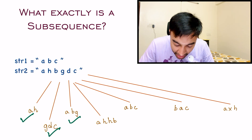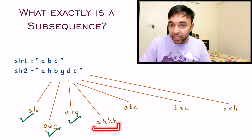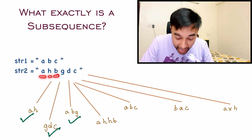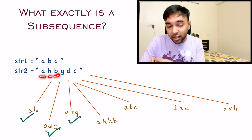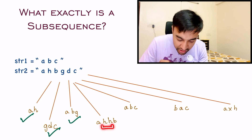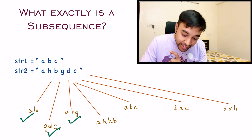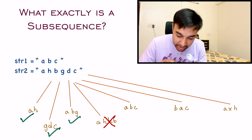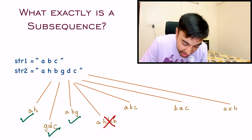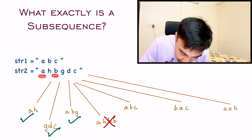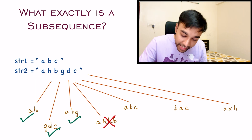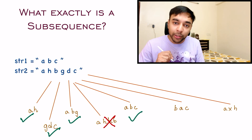Next, consider the string 'AHH B'. If you look in the original string, you have all three characters and they appear in the same order, but the frequency of H is different — here you have two H's and the original only has one H. So this will not be a valid subsequence. Moving on to 'ABC' — you can find A, then B, then C in the same order, so yes, this is a valid subsequence.